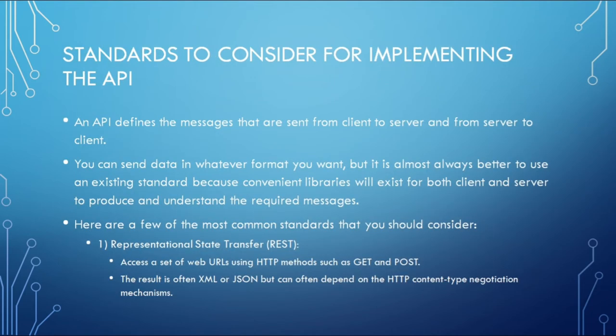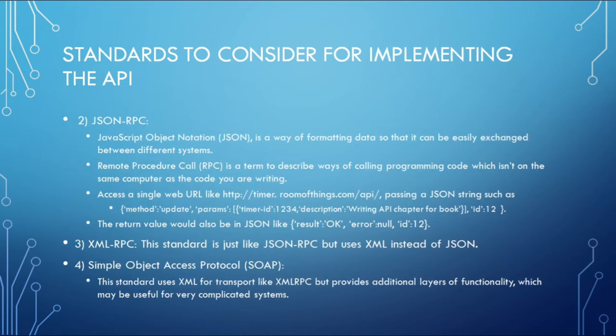There are different standards for implementing an API. An API defines the messages sent from client to server and from server to client. It is almost always better to use an existing standard because convenient libraries will exist for both client and server to produce and understand the required messages. The most common standards to consider are Representational State Transfer (REST), JSON-RPC, XML-RPC, and Simple Object Access Protocol (SOAP).